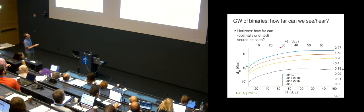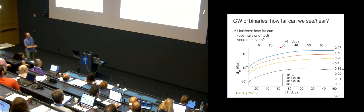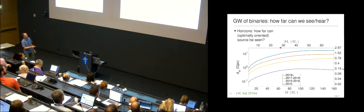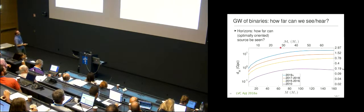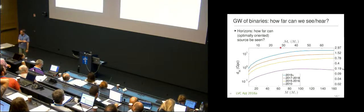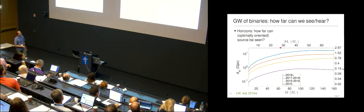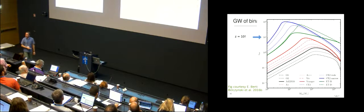you can see to something like 1 to 10 gigaparsecs. Or if you're more familiar with this scale, this is the redshift, sort of redshifts of 0.2 to 0.5 or to 2. Of course, these are extremely massive objects, so you would need very massive black holes.